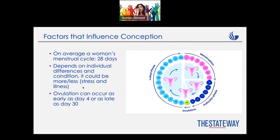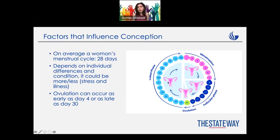So infertility is common, but there are solutions. Before talking about those solutions, let's talk about conception, because this is the first step. On average, a woman's menstrual cycle is 28 days — there's the menstruation period, then another phase, and right after that, on days 13, 14, and 15, we have ovulation. This is the most probable time for a woman to get pregnant. After that, we have the luteal phase, and then the cycle begins again.